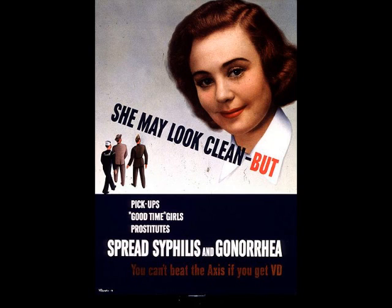In World War II there were posters warning soldiers about venereal disease. So-called 'good time girls' and prostitutes were said to spread syphilis and gonorrhea. The message was: 'You can't beat the Axis if you get venereal disease.' There were many leaflet posters alarming soldiers to protect themselves.